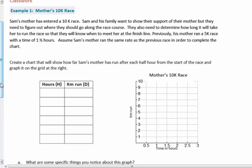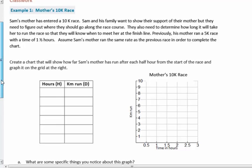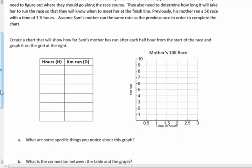They also need to determine how long it will take her to run the race so that they will know when to meet her at the finish line. Previously, his mother ran a 5K race with one and a half hours. Assume Sam's mom ran the same rate as the previous race in order to complete this chart. We're going to make a table, a chart, same thing.